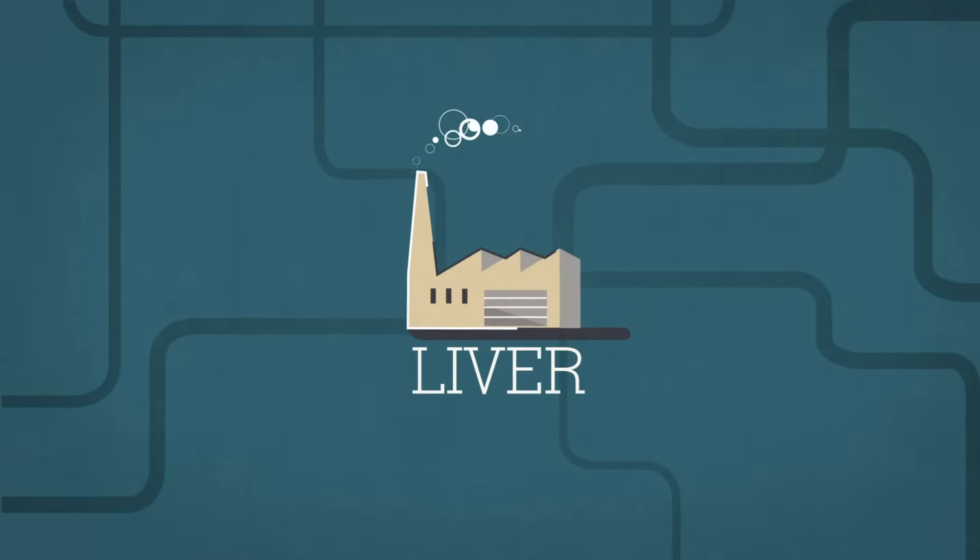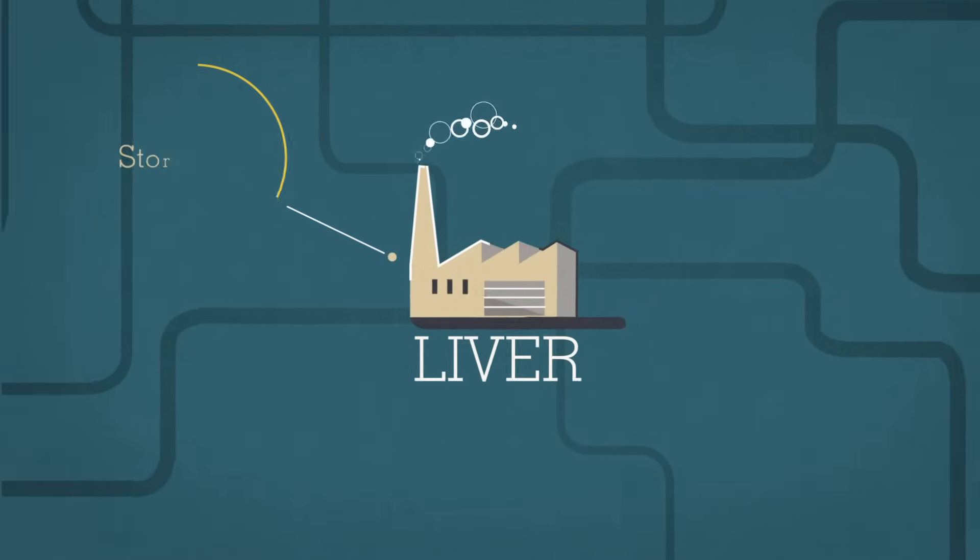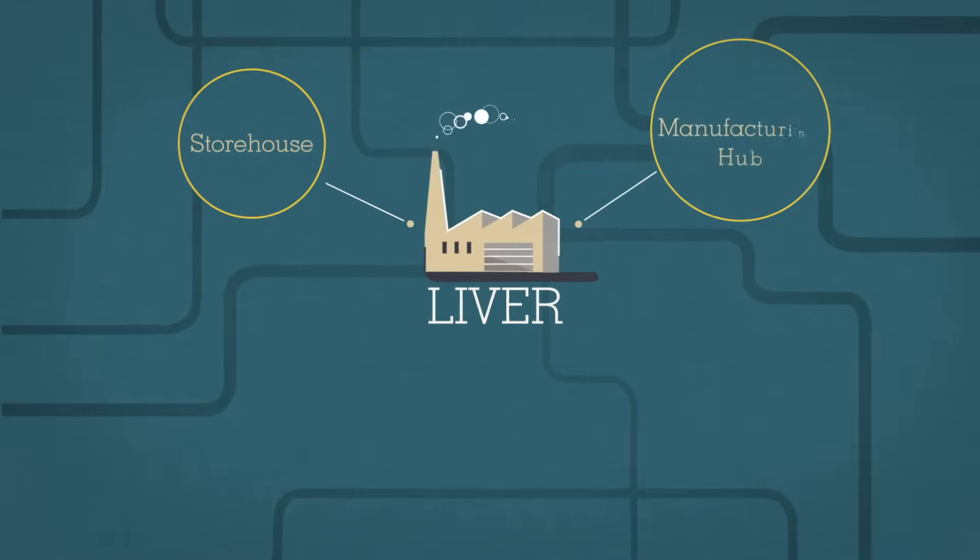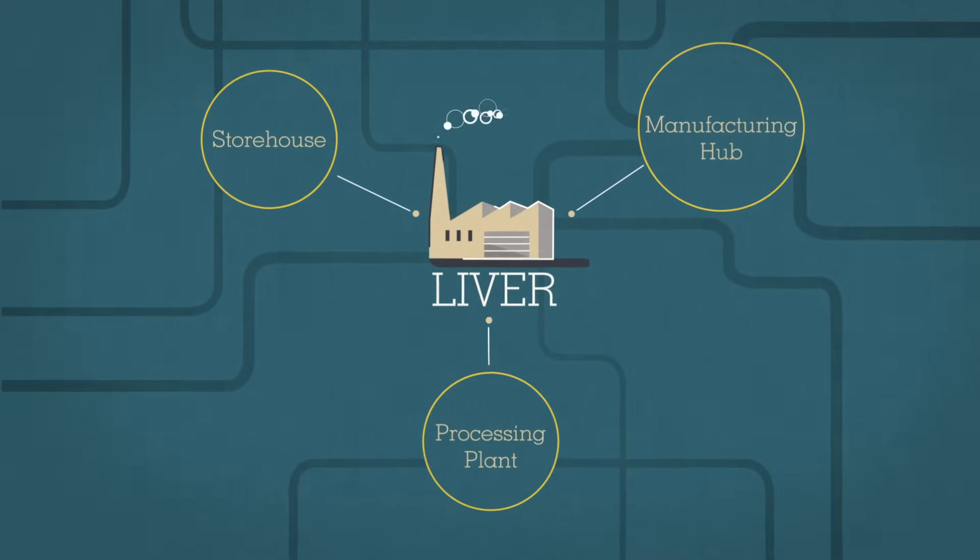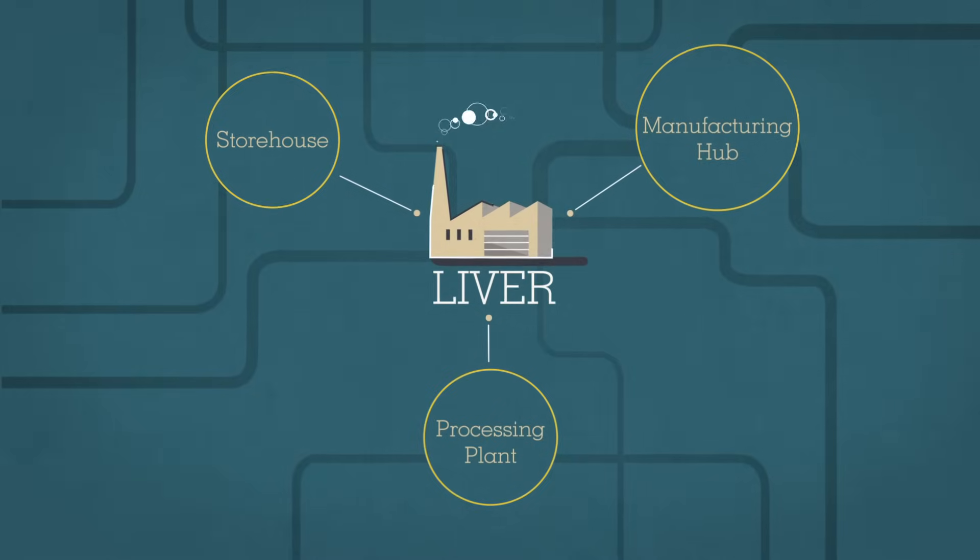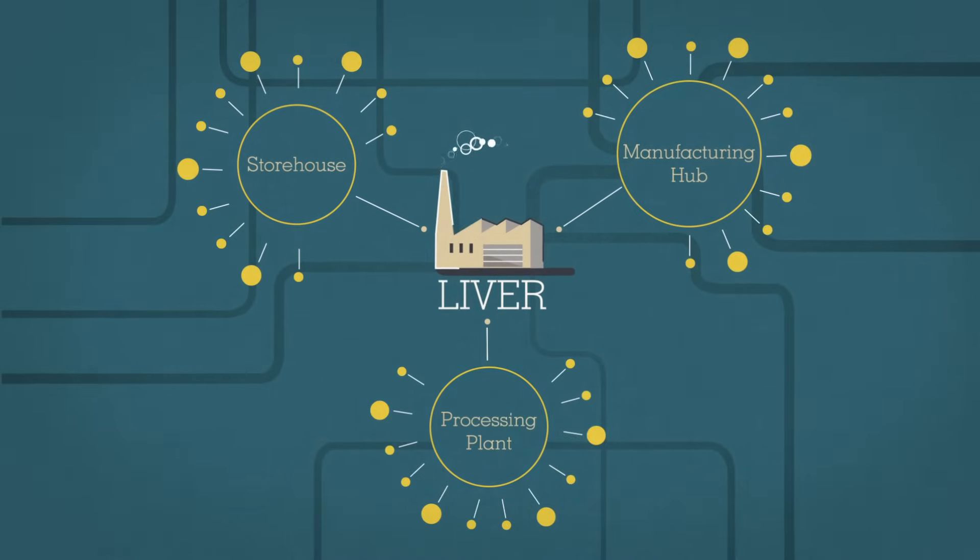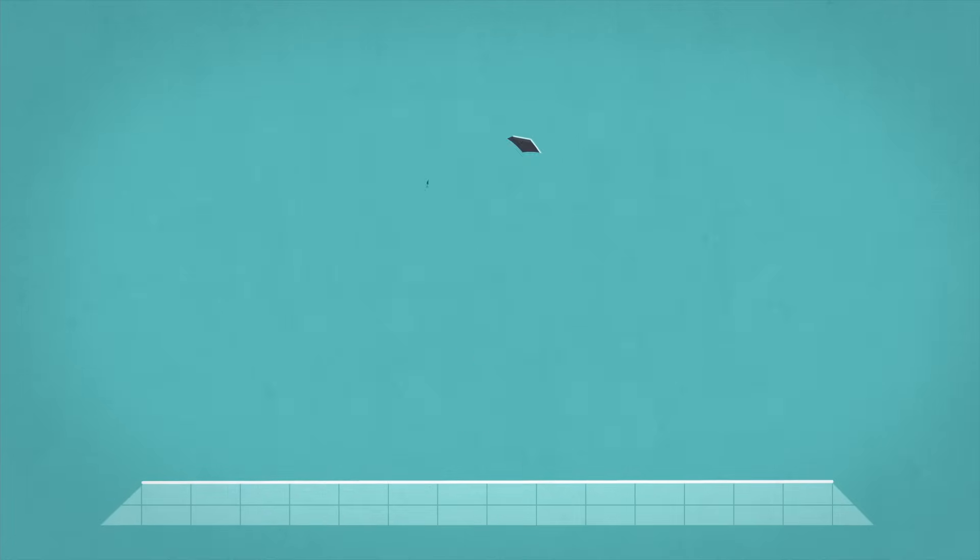This industrious structure simultaneously acts as a storehouse, a manufacturing hub, and a processing plant. Each of these functions involves so many important sub-tasks that without the liver, our bodies would simply stop working.